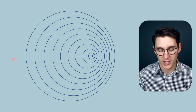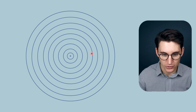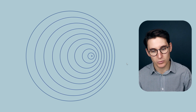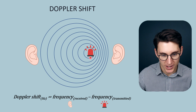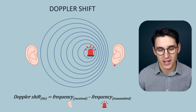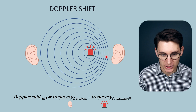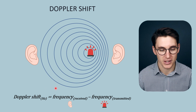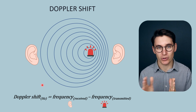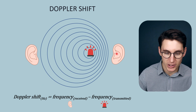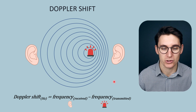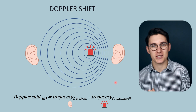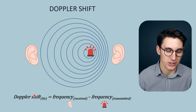It's the movement of that source that changes the frequency of the wave. The difference between the original frequency and the frequency once that sound source moves is what's known as the Doppler shift. We have a source of the sound wave as well as receivers of the sound wave, and it's this observed change in frequency that is known as our Doppler shift. To calculate the Doppler shift — a change in frequency measured in hertz — it's the frequency received minus the transmitted frequency from our source.